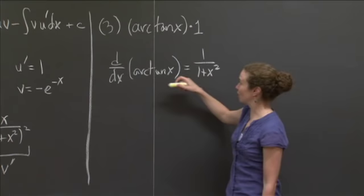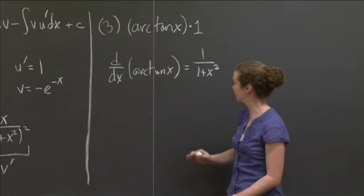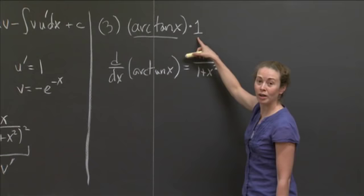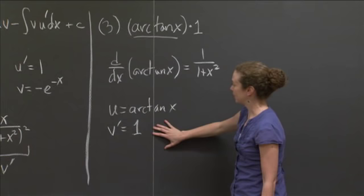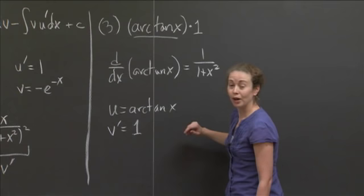So taking a derivative of this puts it in a form that almost looks easy to integrate. What would make this function easy to integrate? If there was an x up here instead of a 1, then I could use substitution. Where do we get that x from when we're solving this problem, when we're actually finding an antiderivative of arc tan x? Well, it's going to come from the fact that I make this u and I make 1 v prime.